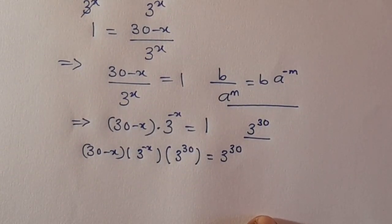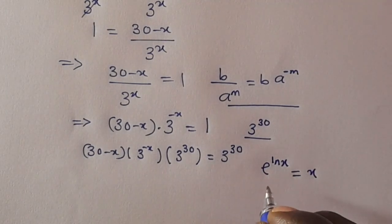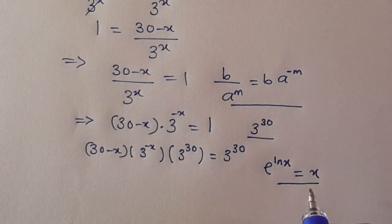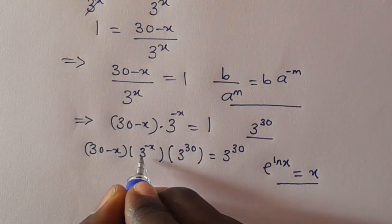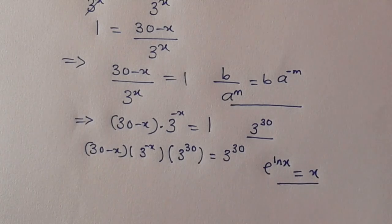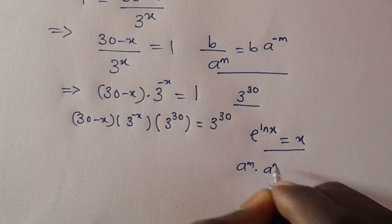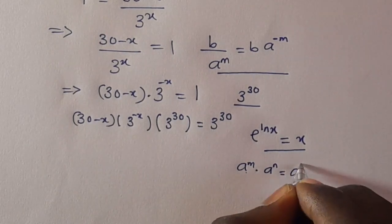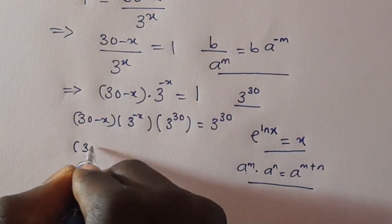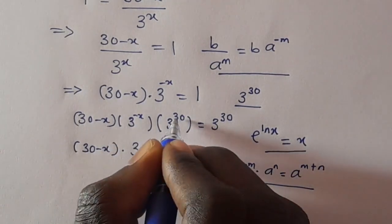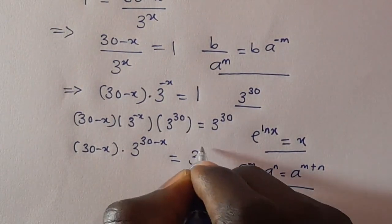We have to take note that when you have e raised to the power ln(x), this always equals x, because the e and ln cancel, then we have our x back. Now, looking at this, we have 3 raised to the power minus x multiplied by 3 raised to the power 30. According to the law of indices, when you have the same base, you take one base and add the powers together, giving 3 raised to the power (30 minus x). Then we have (30 minus x) multiplied by 3 raised to the power (30 minus x) equals 3 raised to the power 30.